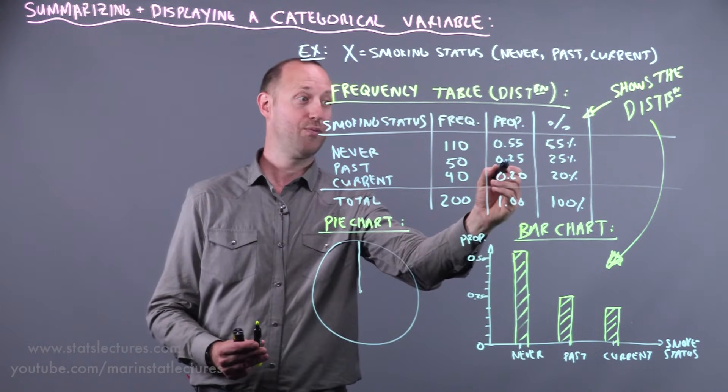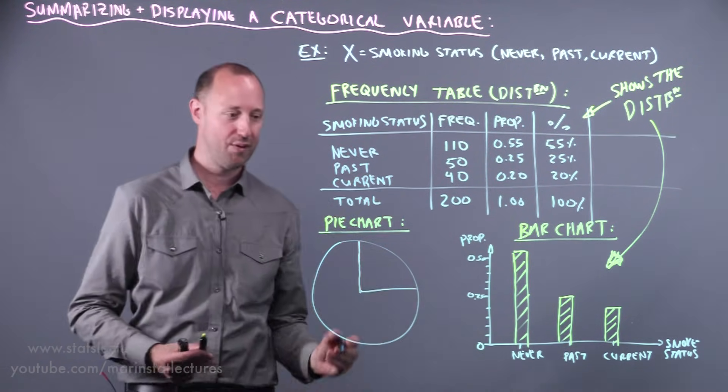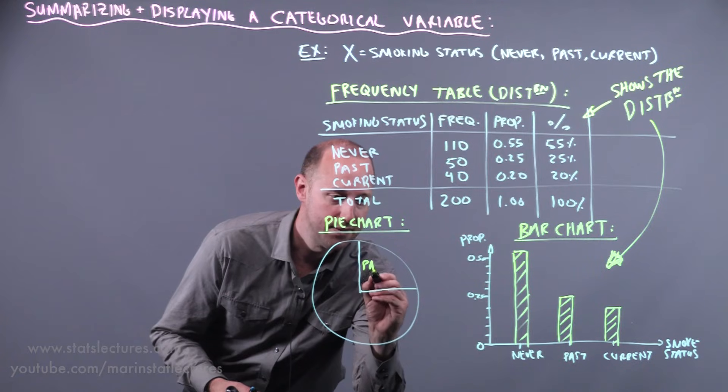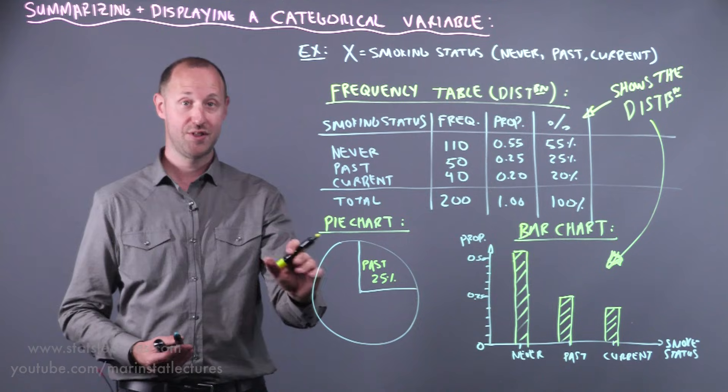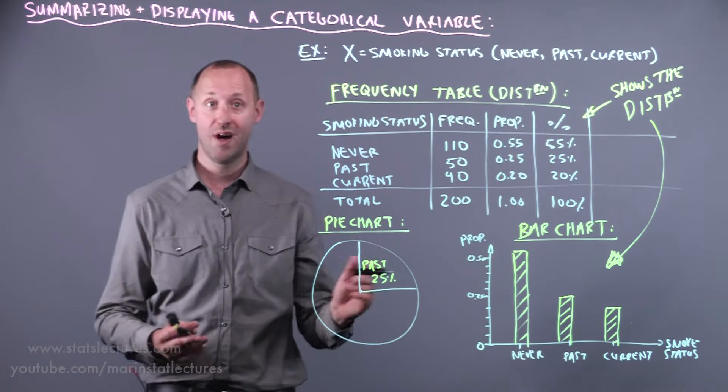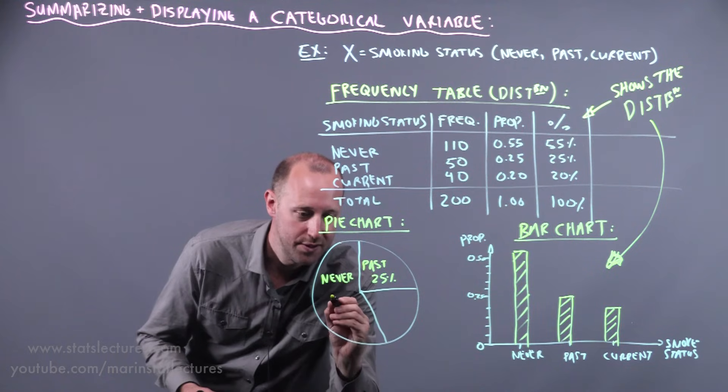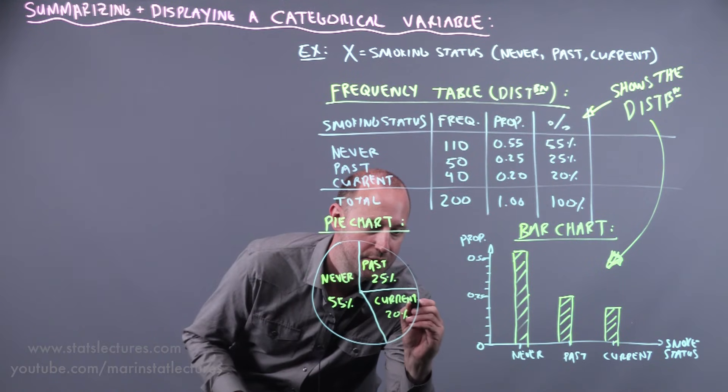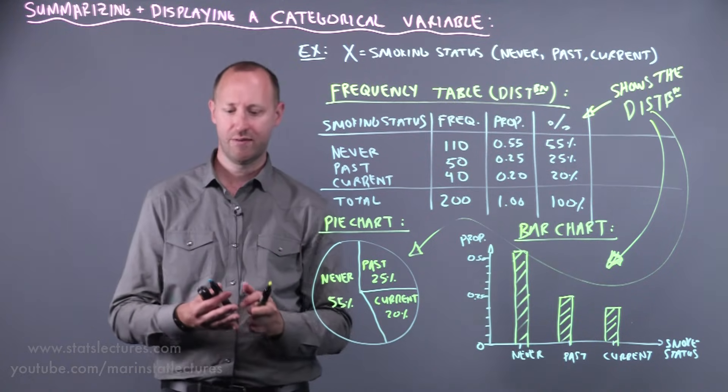They're a proportion of 0.25, or 25% of our sample, so I'm starting with that because it's the easiest one to draw—it's one quarter of the pie, and I'll label this as being past. It's also nice if the percentages or proportions are written in there. The next are the never smokers, who represented 0.55 or 55%—roughly here—and the current are 20%. This shows the distribution for our sample, another visual way of showing this.